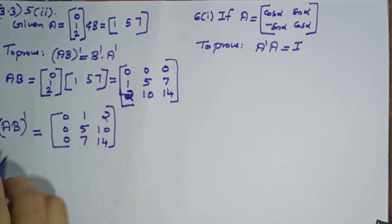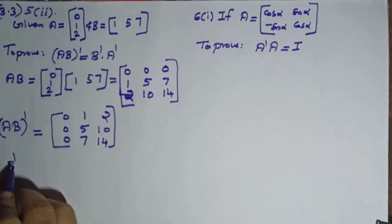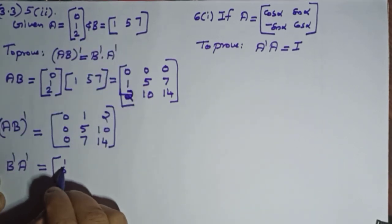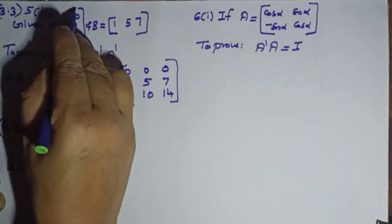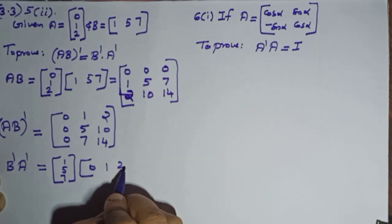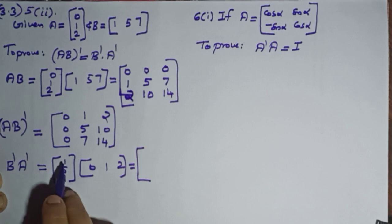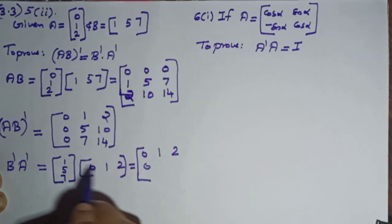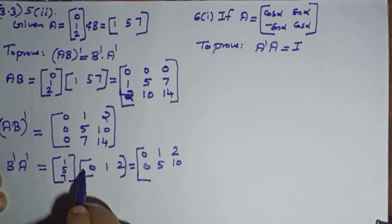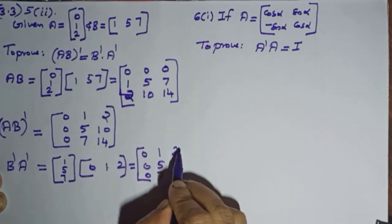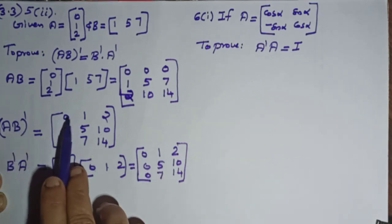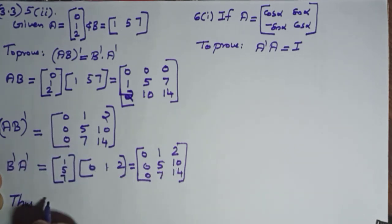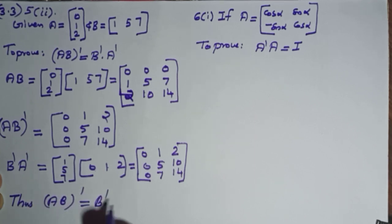Now calculate B-dash into A-dash. B-dash is the column matrix (1, 5, 7) and A-dash is the row matrix (0, 1, 2). This gives: first row 0, 1, 2; second row 0, 5, 10; third row 0, 7, 14. Observing the two results, AB-dash equals B-dash into A-dash. Thus verified.